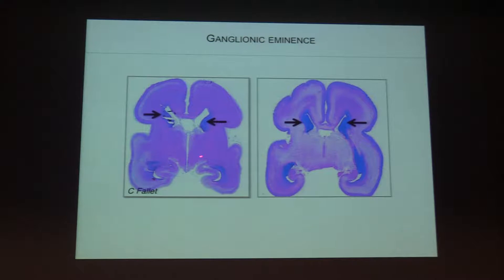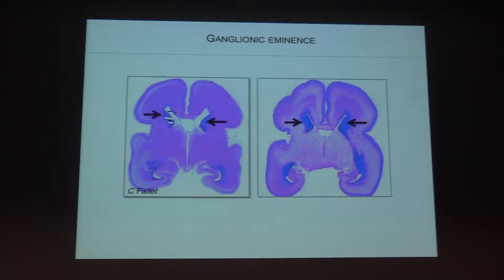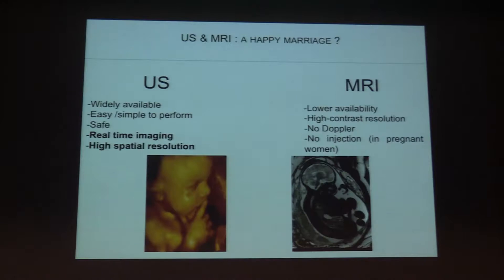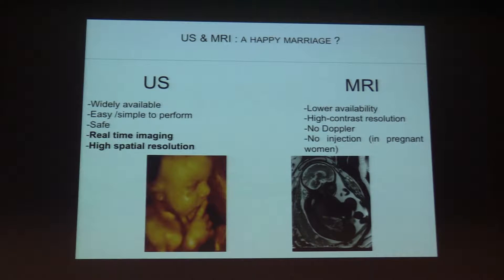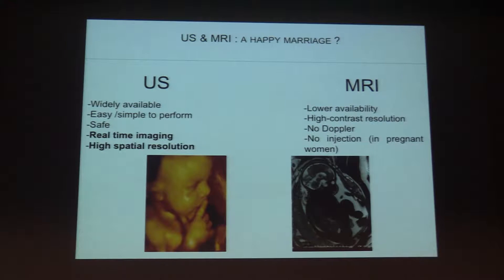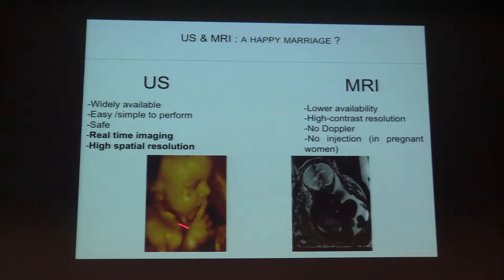This aspect of a band lining the ventricular structures is very important to know in the fetal brain, because it is the reserve of cells. During gestation, this particular aspect will disappear as all the cells migrate. Now let's talk about imaging these different steps and the different sulci — for that we have ultrasound and MRI.